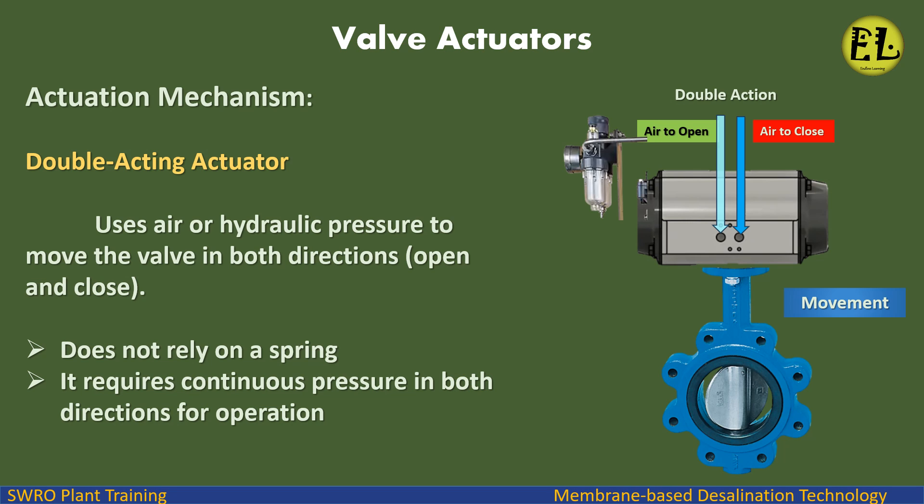Actuation mechanism — double acting actuator: uses air or hydraulic pressure to move the valve in both directions, open and close. Does not rely on a spring; it requires continuous pressure in both directions for operation.